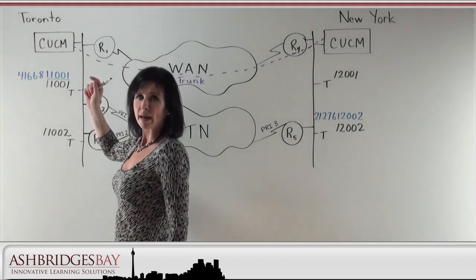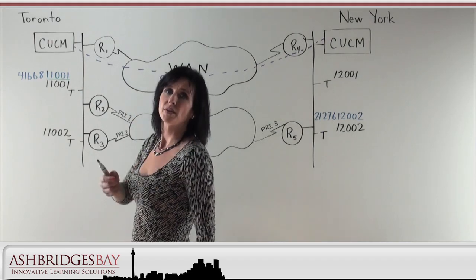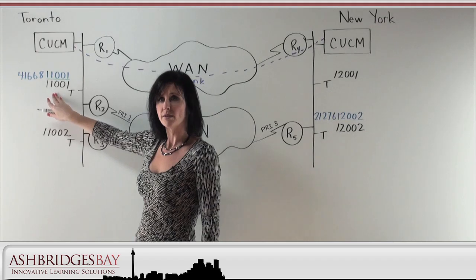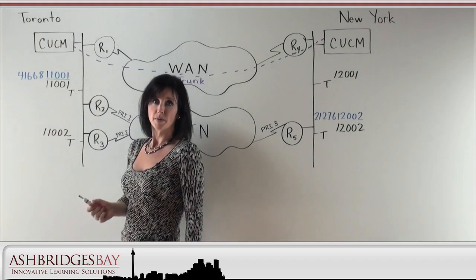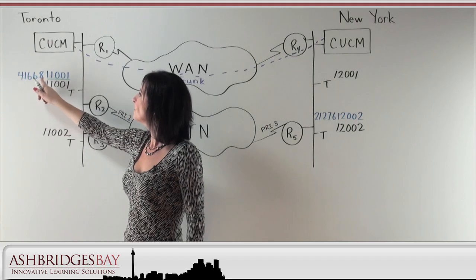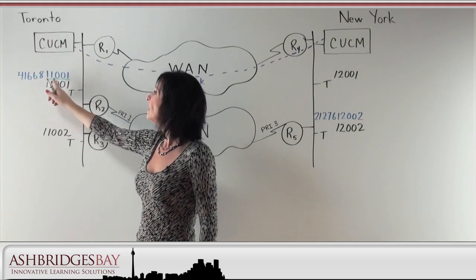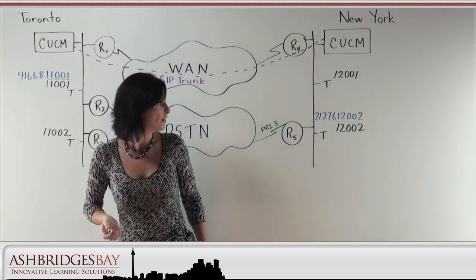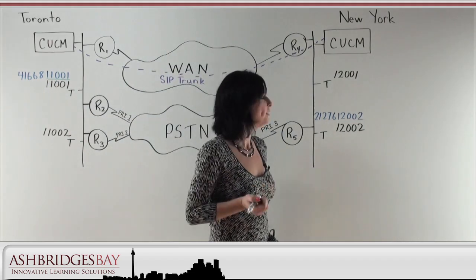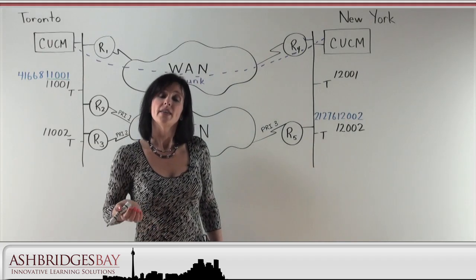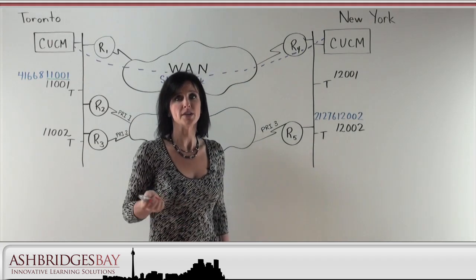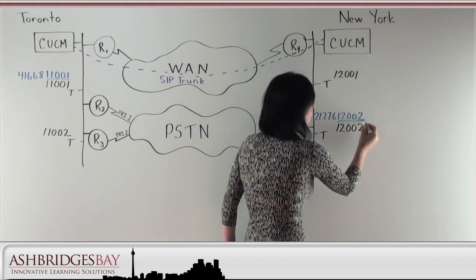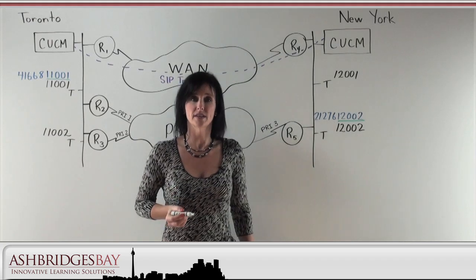This is from our lab network. In our labs, pod 1 is Toronto and pod 2 is New York City. Here we have an example of an extension 11001. The local 10-digit phone number for this number is 416-681-1001. The last 5 digits of the 10-digit phone number is the extension number. Similarly in New York we have extension 12002, and the actual 10-digit local phone number for that number is 212-761-2002. Again, we are looking at the last 5 digits of the 10-digit number as your extension number.